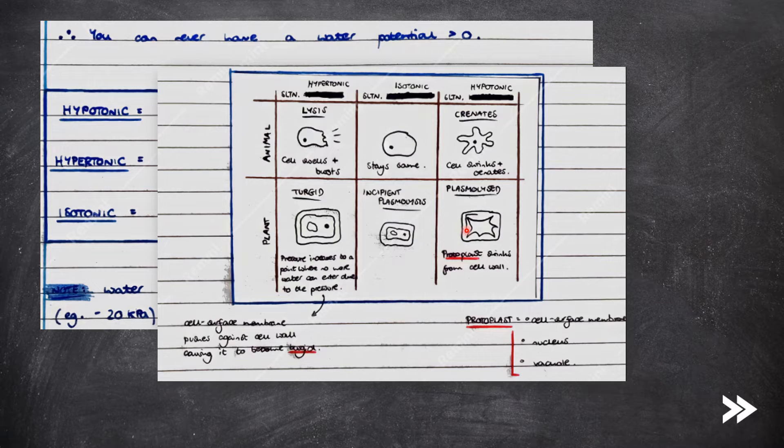If the surrounding solution is isotonic, nothing will happen. If the surrounding solution is hypotonic, in animal cells this would result in the cell crenating, meaning that it shrinks. In plant cells, it would result in the cell becoming plasmolyzed, which is when the protoplast, which is made up of the cell surface membrane, the nucleus and the vacuole, shrinks from the cell wall.